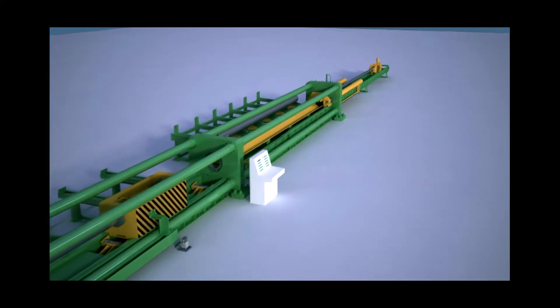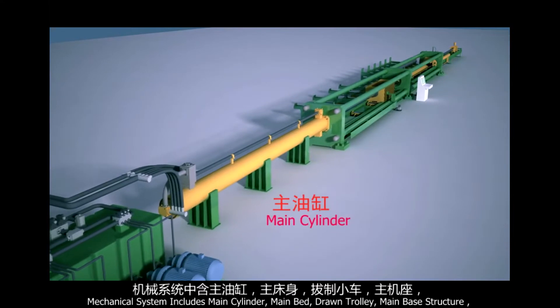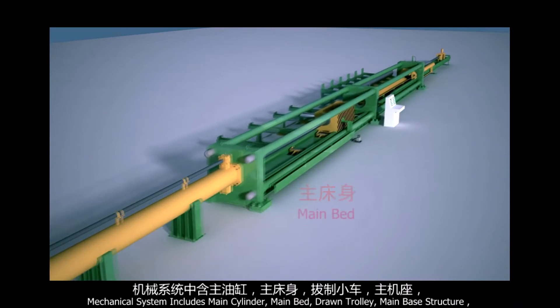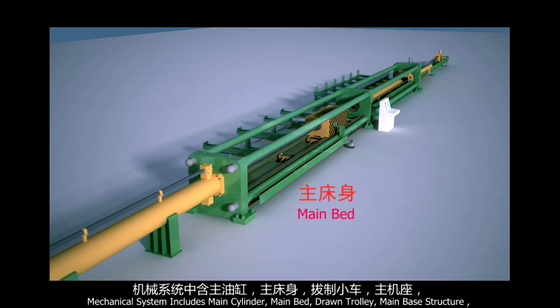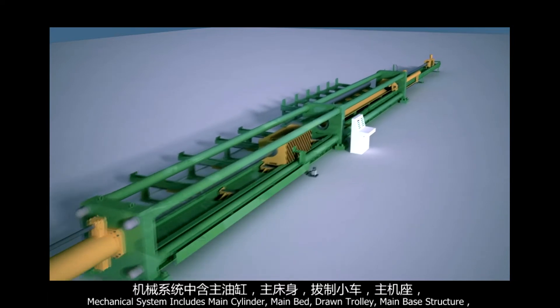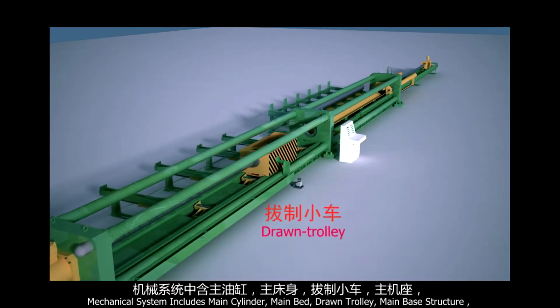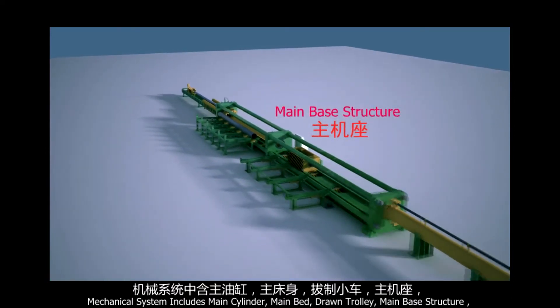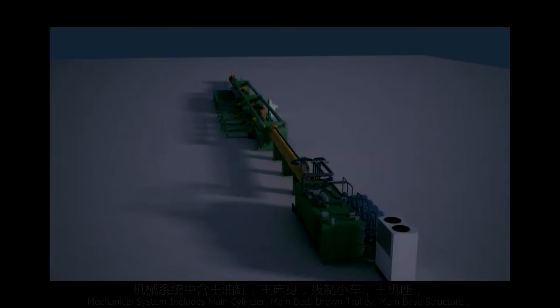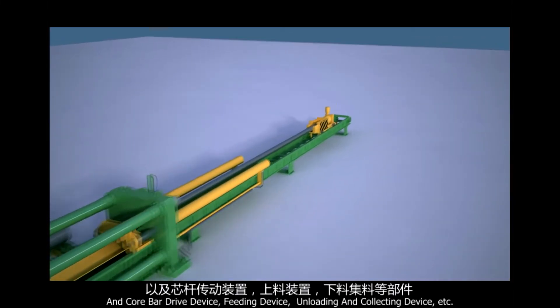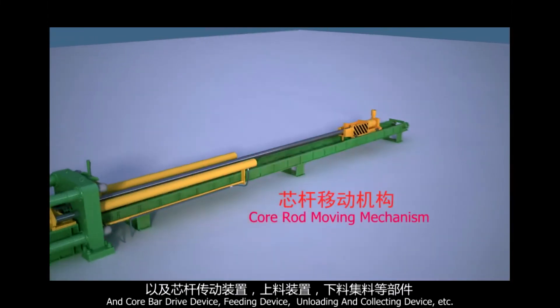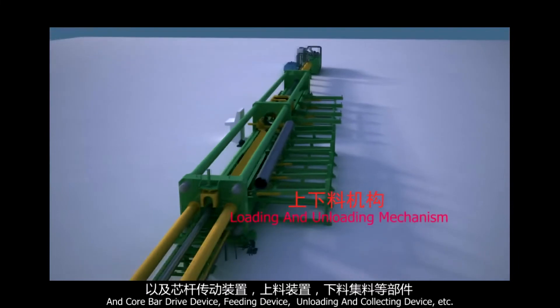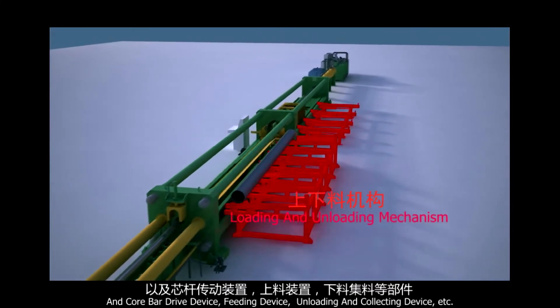Mechanical system includes: main cylinder, main bed, drawing trolley, main base structure, core bar drive device, feeding device, unloading and collecting device, etc.